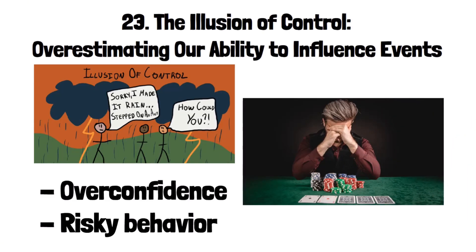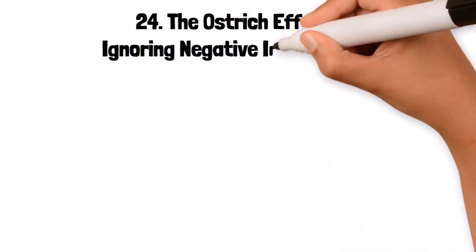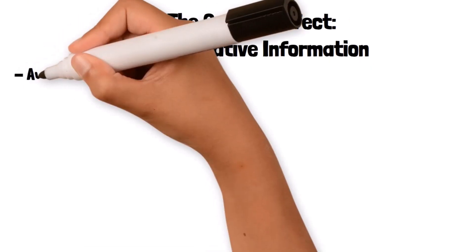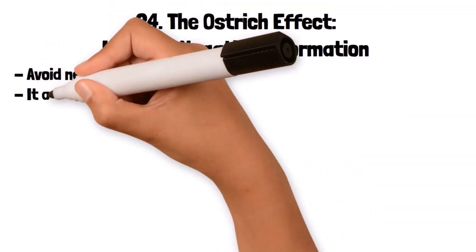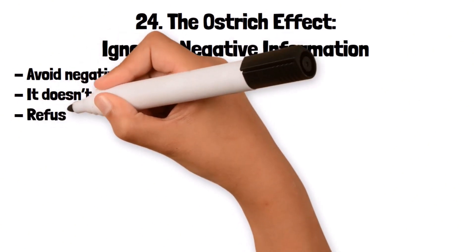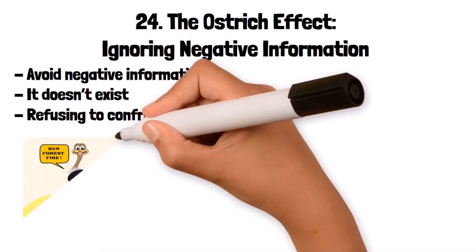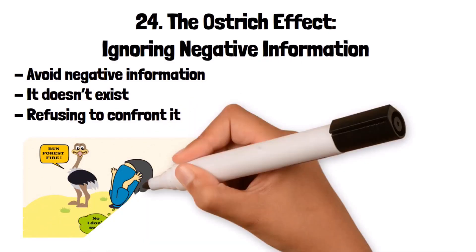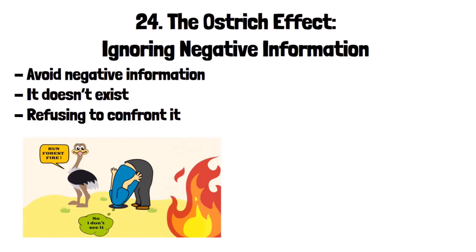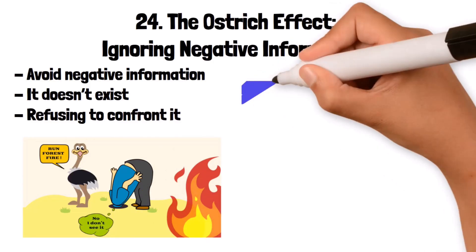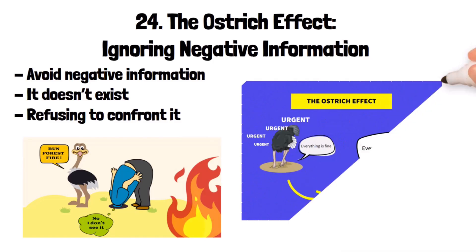24. The Ostrich Effect: ignoring negative information. The ostrich effect is a cognitive bias where people avoid negative information by pretending it doesn't exist or refusing to confront it. This bias is named after the myth that ostriches bury their heads in the sand to avoid danger. For example, an investor might avoid checking their stock portfolio during a market downturn, hoping that ignoring the situation will somehow make it better.